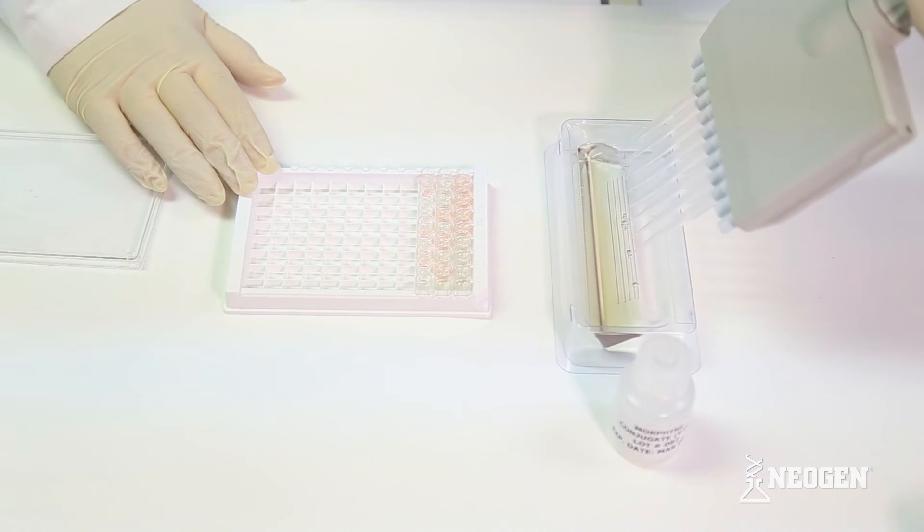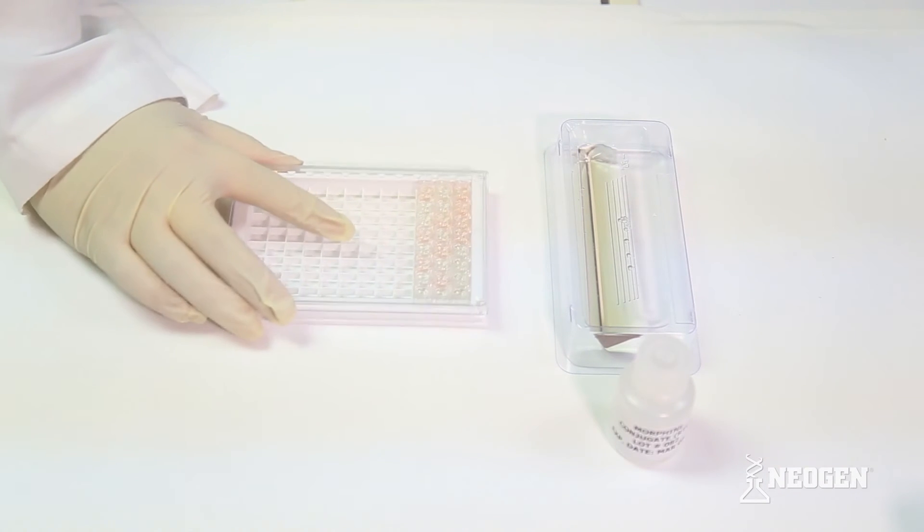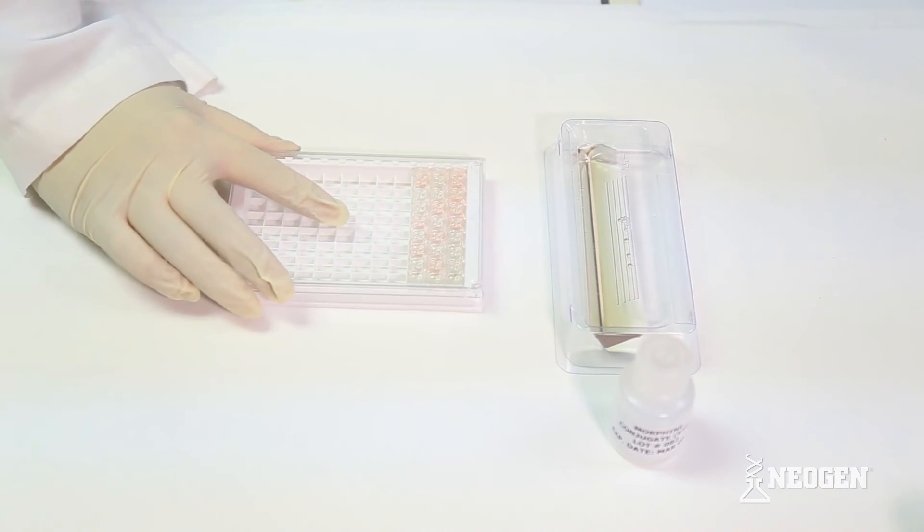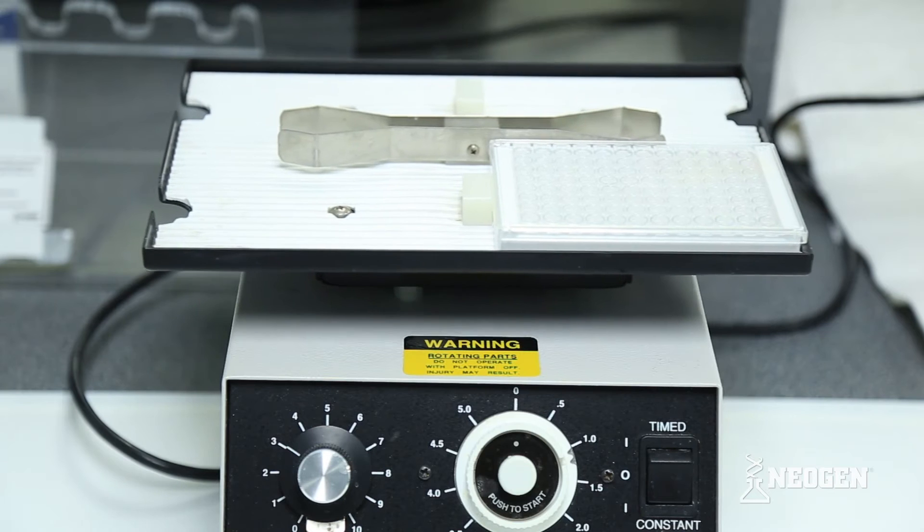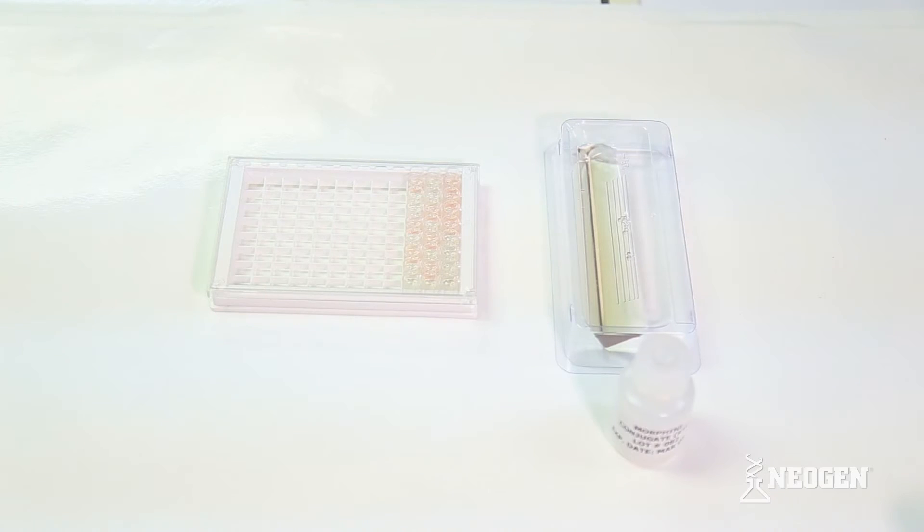Once the conjugate has been added to all wells, gently shake the plate for a minute or use a microplate shaker if one is available. Cover the plate and allow it to incubate at room temperature for 45 minutes.